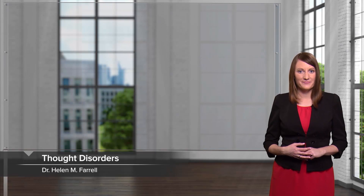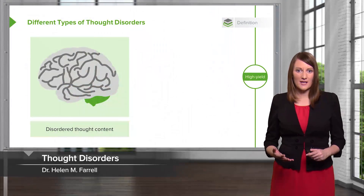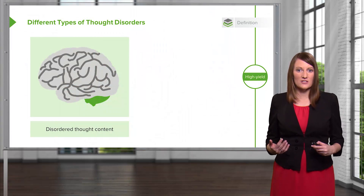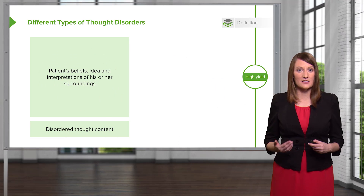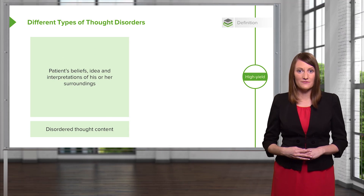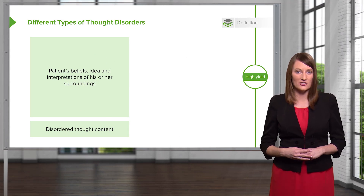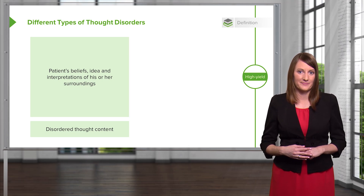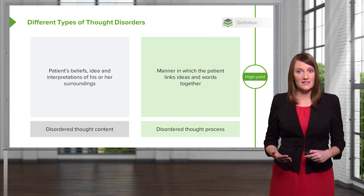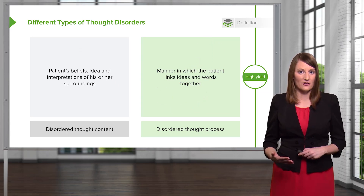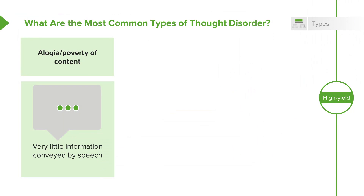Let's talk a little bit more about thought disorders. There are different types of thought disorders. We think about disordered thought content, which looks like disruption in a patient's beliefs, ideas, and interpretations of their surroundings. Disordered thought process is the manner in which the patient links ideas and words together. Let's consider a couple of the common types.